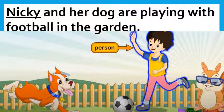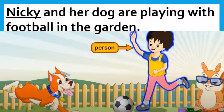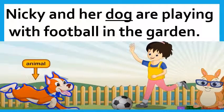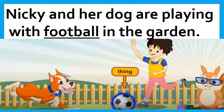Who is she? She is a person. Her name is Nikki. Nikki and her dog are playing with football in the garden. Nikki is the name of a person. And where are they playing football? They are playing football in the garden, so garden is the place. Who is with Nikki? Her dog — so dog is an animal. With which thing are they playing? They are playing with a football and it's a thing. So nouns are the names of a person, place, animal, or thing.